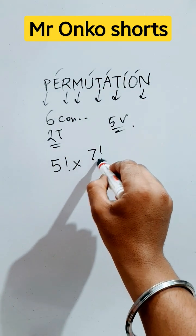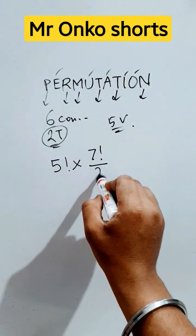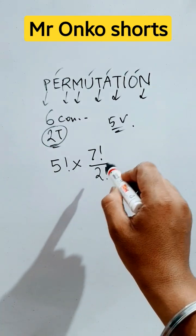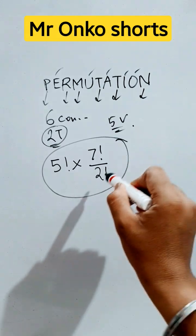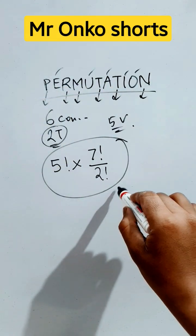That is seven. So 7 factorial divided by - two T's are there, so the repetition will be in the denominator - that is 2 factorial. Thus we can form 5! × 7!/2! words using the letters of the word PERMUTATION.